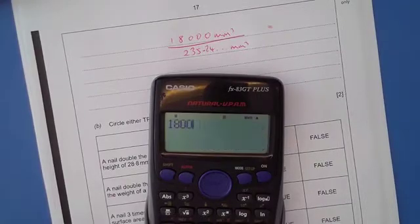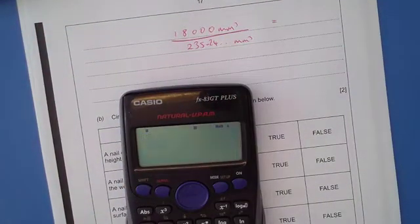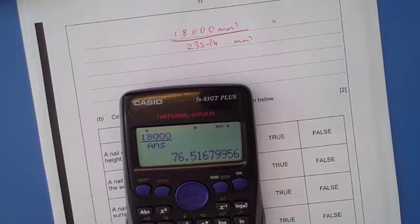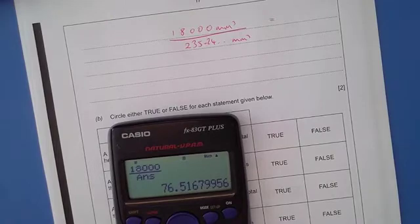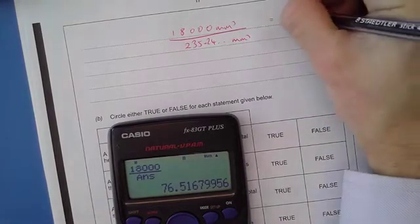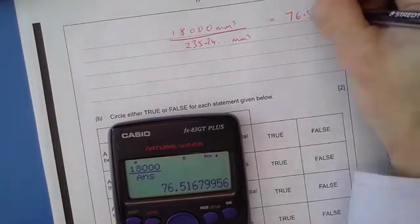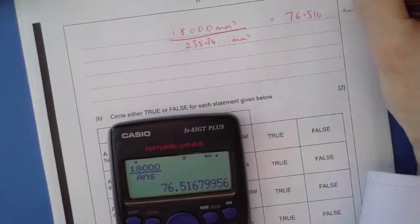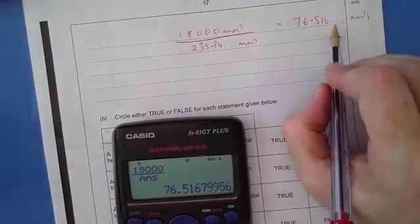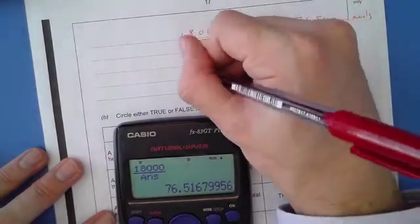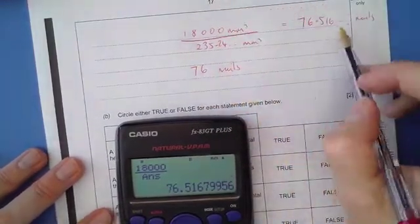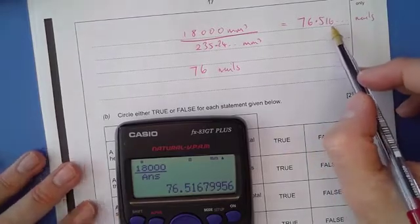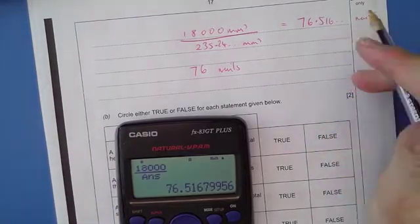If we've got 18,000 millimeters cubed of a volume that we're going to use, and we know that one nail takes up 235.24 millimeters cubed, that will give us the number of nails. So what I want to put into my calculator is 18,000 divided by that number, using ANS as a way of having consistency and using a really accurate way of making sure you have no rounding errors, which comes to 76.516 nails. So that's telling me it's 76 and a bit nails, so that means I can make 76 nails. We wouldn't round that up because it's 76 and a bit. Even if it's 0.999, I can't make that 77th nail.